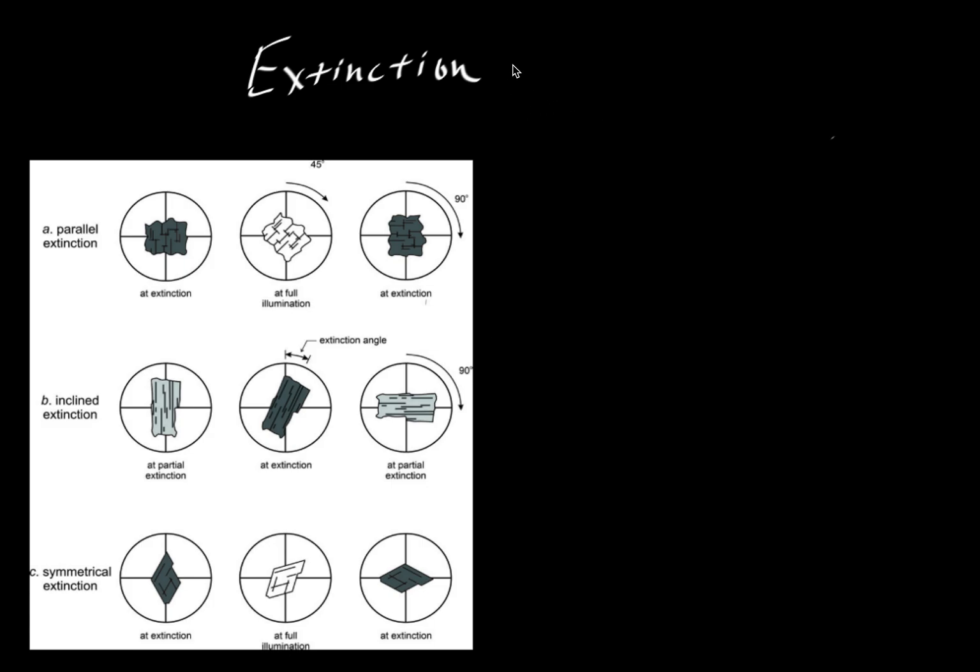Here we're going to take a look at the so-called extinction angles or the phenomenon of extinction in minerals when we view them in a petrographic microscope. You might remember from another video that in a petrographic microscope we have a lower nickel. Let's say that lower nickel only passes light that vibrates in an east-west direction. So as light comes in, it's vibrating in all different directions, but once it comes through and propagates up towards the mineral, it's only vibrating east-west.